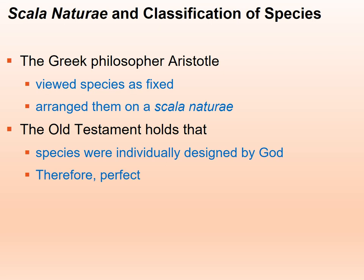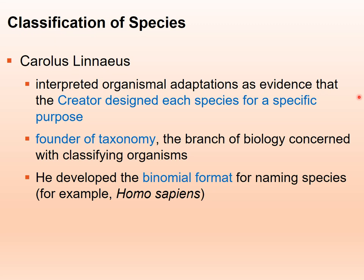The Old Testament described species as things that were designed by God and therefore perfect for their purpose. One of the more notable scientists, Carolus Linnaeus, developed binomial nomenclature. He saw adaptations in organisms as suggesting that there was a creator — that each species was developed for a particular purpose. He is the father of taxonomy, the area of biology that deals with classifying organisms into their major groups, and many of their names are related to this as well.